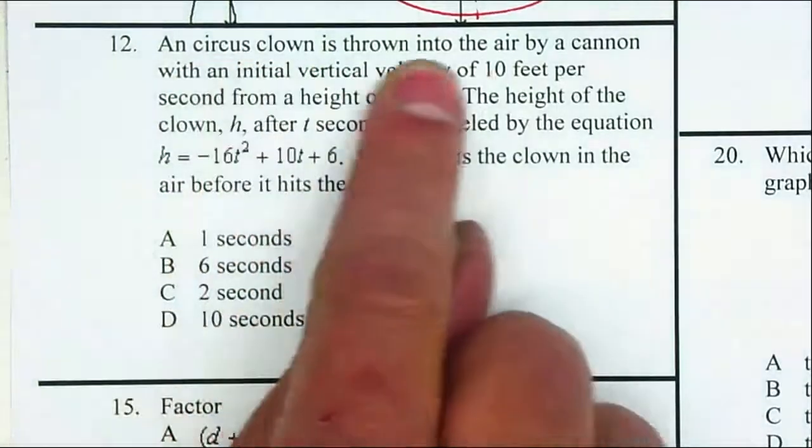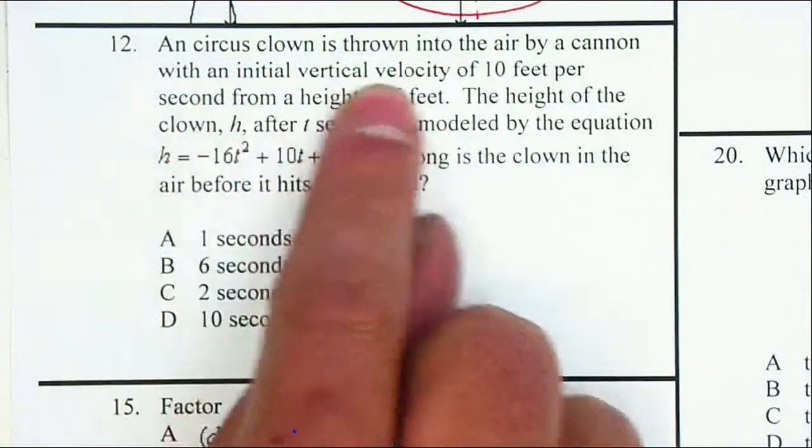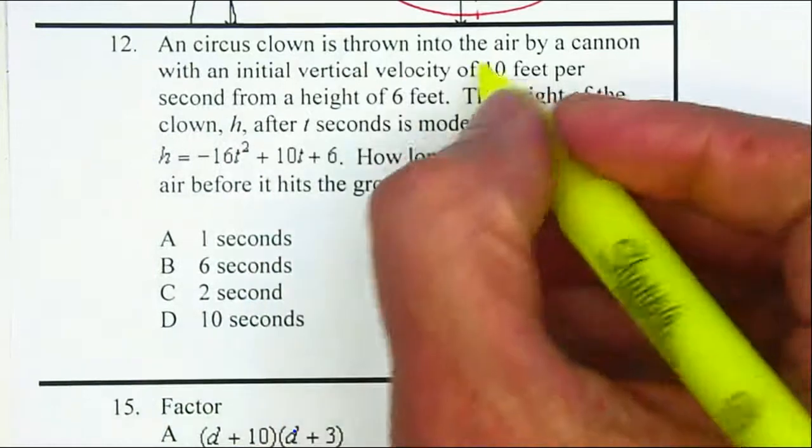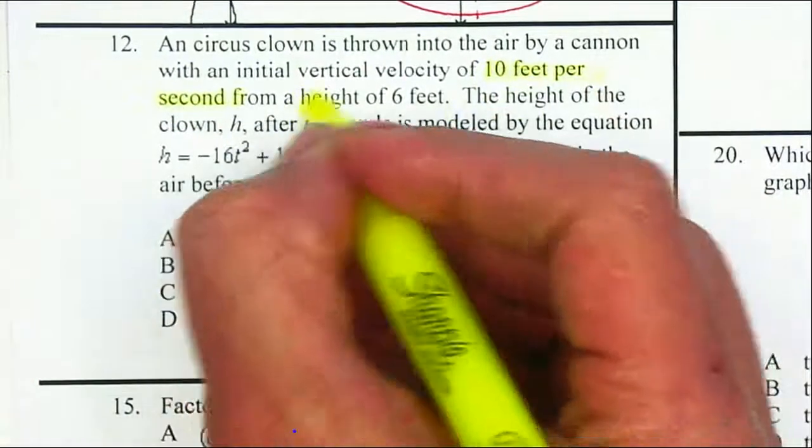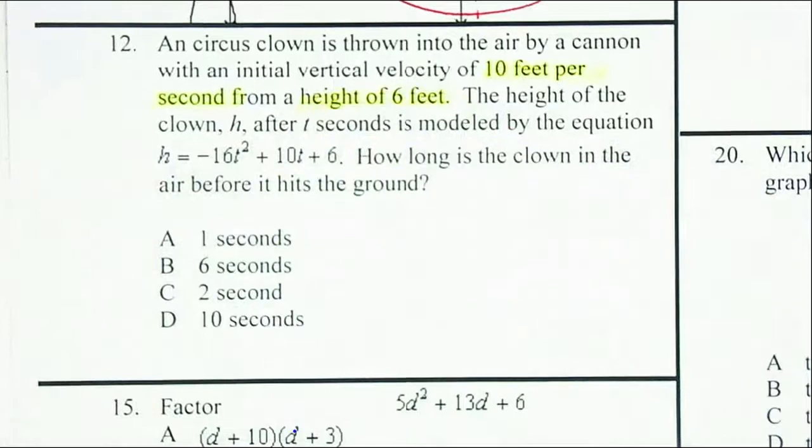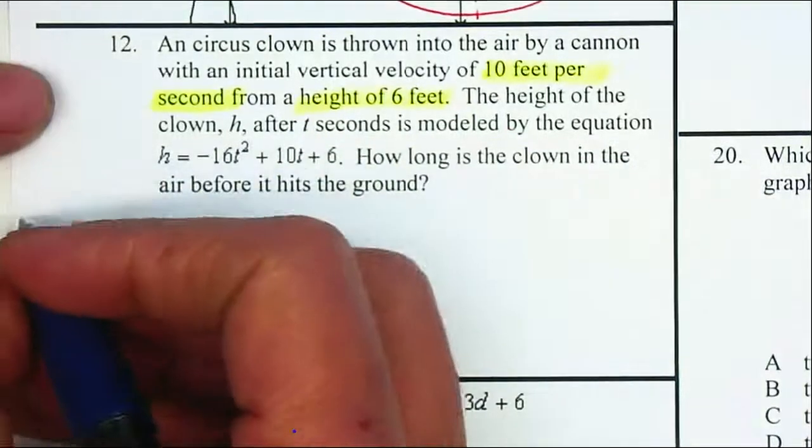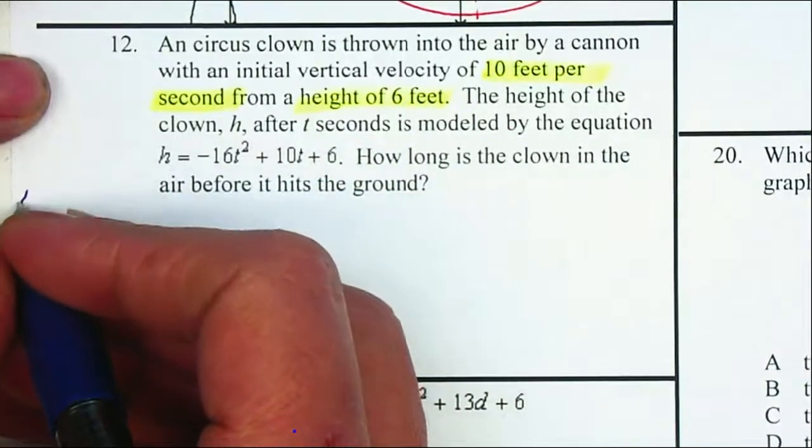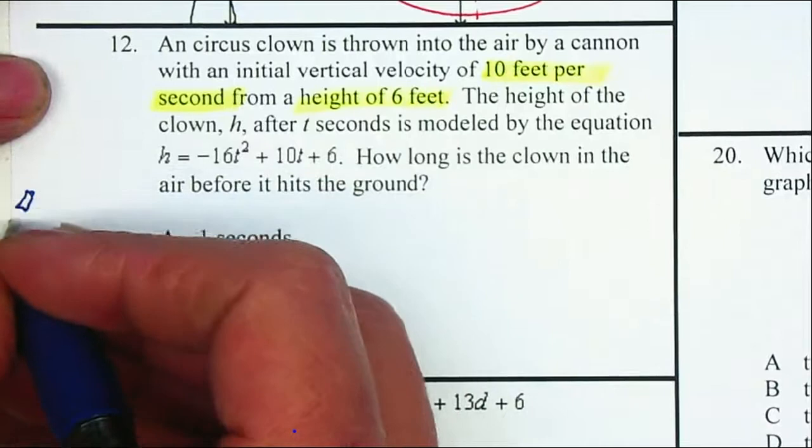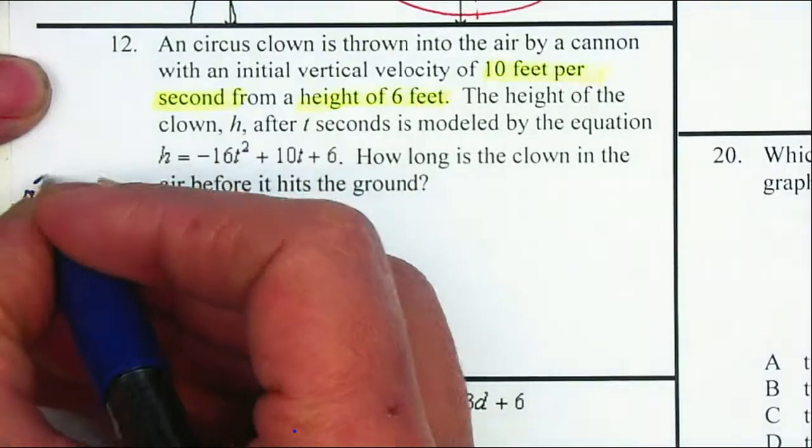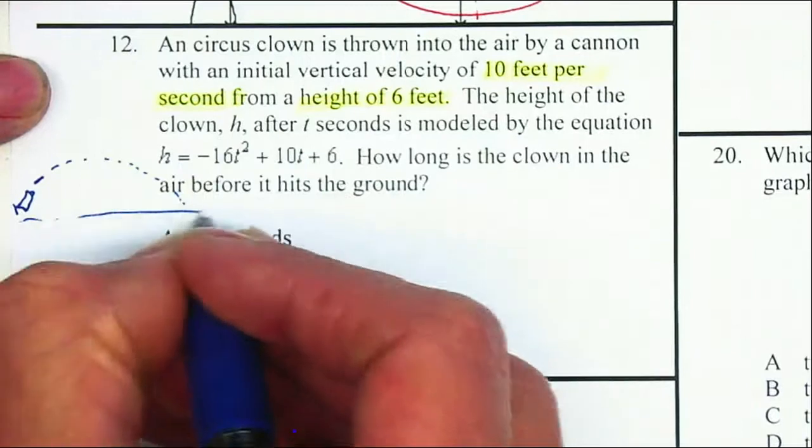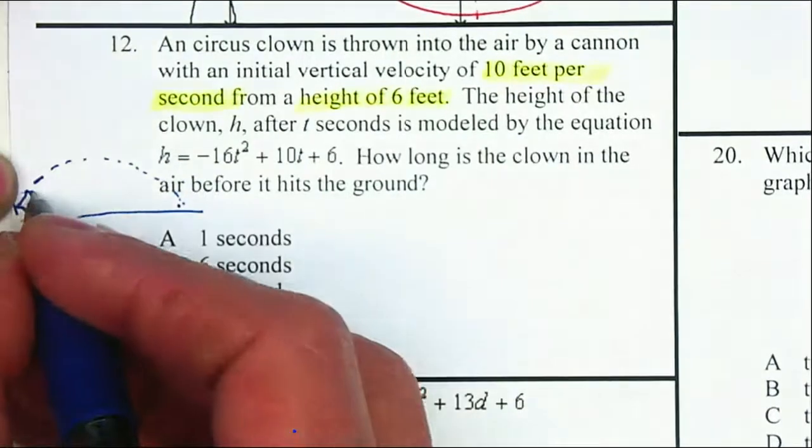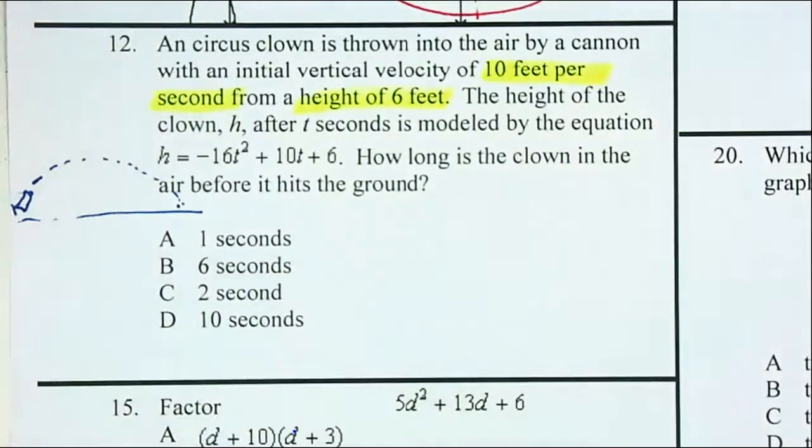A circus clown is thrown into the air by a cannon with an initial velocity of 10 feet per second from a height of 6 feet. Remember, anything that goes up must come down. Here's a cannon and he's been thrown into the air. We want to find out where does it land. It starts at 6 feet.